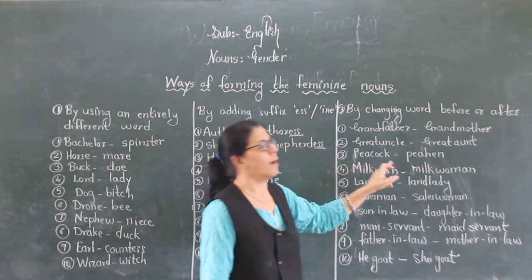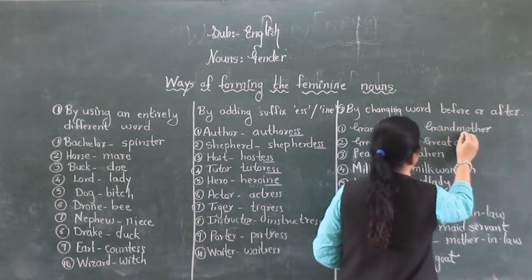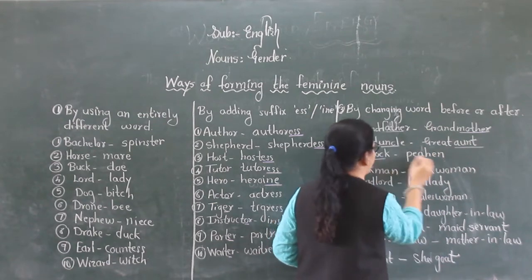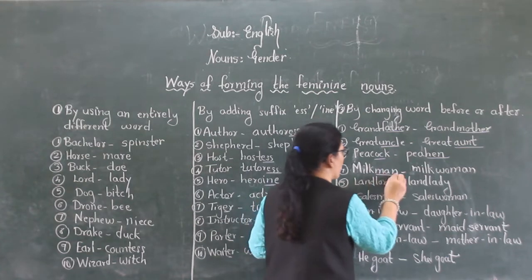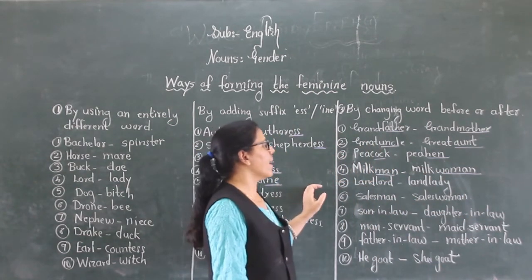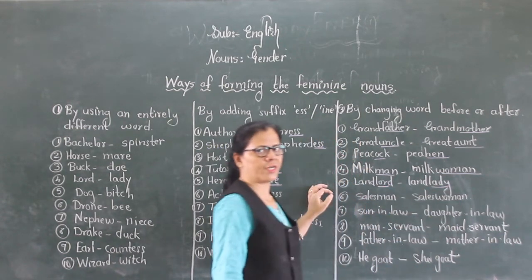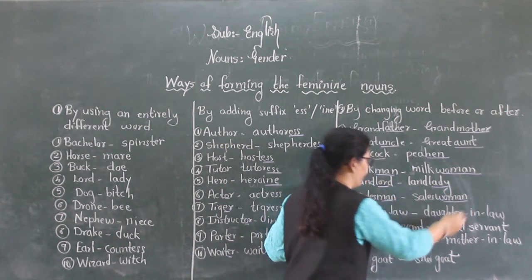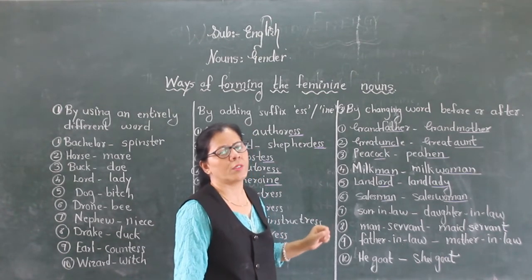Peacock, peahen — just we have changed the latter part. Milkman, milkwoman — man has changed to woman. Landlord, landlady — half the part has been changed. Salesman, saleswoman. Son-in-law, daughter-in-law — son changes to daughter.